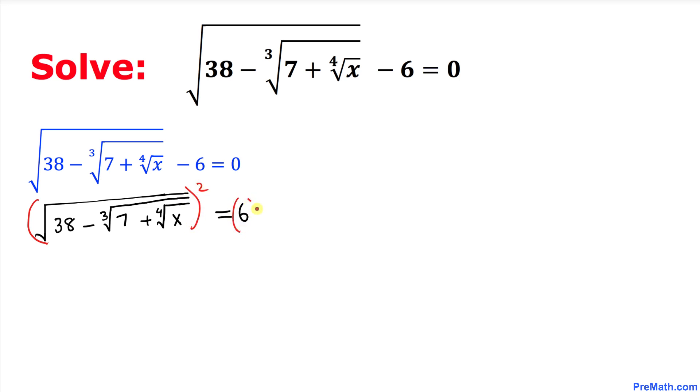As you can see, this square and square root they undo each other. So we ended up with 38 minus the cube root of 7 plus the fourth root of x.